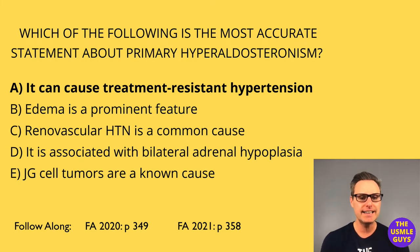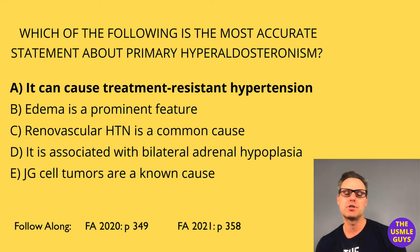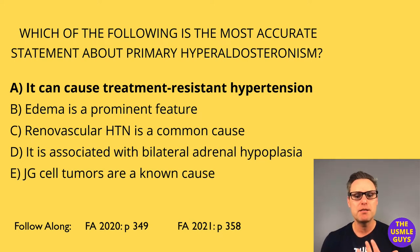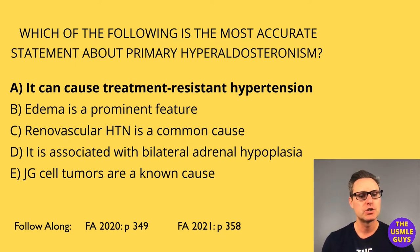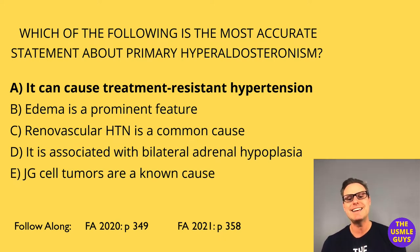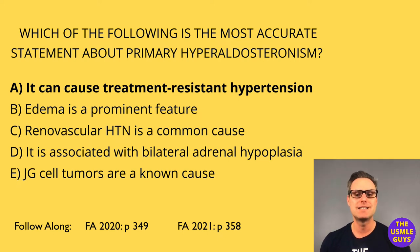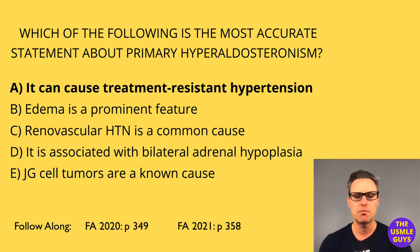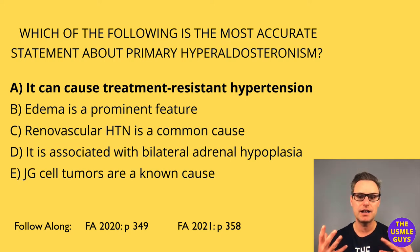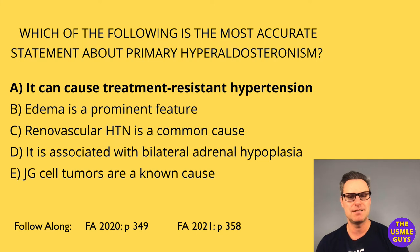Secondary hyperaldosteronism can result from a renin-producing juxtaglomerular cell tumor, renal vascular hypertension, or edema from conditions like cirrhosis, nephrotic syndrome, or heart failure. It's important to note that while secondary hyperaldosteronism is associated with edema, the primary form is not — because in primary hyperaldosteronism, the aldosterone escape mechanism doesn't directly cause edema, while in secondary this effect is impaired.